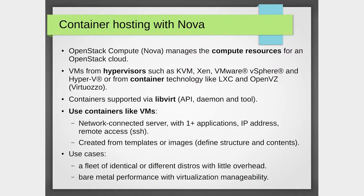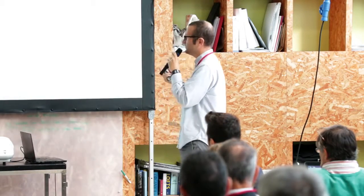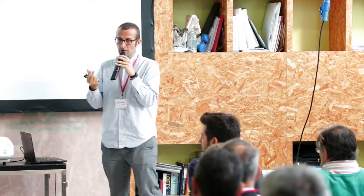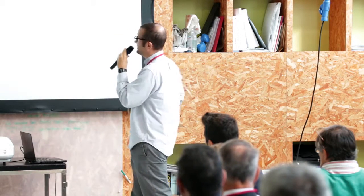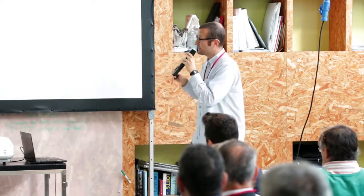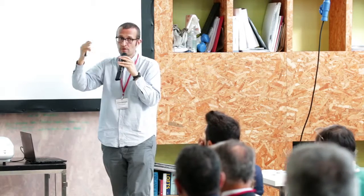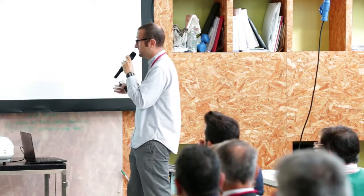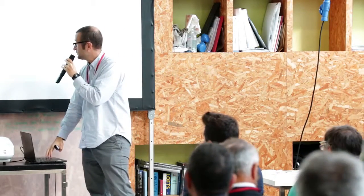Just to make things a little more complicated: I told you containers are not a replacement for virtual machines, but they can actually be used as virtual machines when we get to operating system containers only. If we use libvirt — the API and daemon for running cloud instances — with libvirt we can use KVM, VMware vSphere, Hyper-V, and also LXC. In that particular case we can use containers as we use virtual machines: we have a network connection, we can SSH into it, put applications there, and use images and templating. This can be done for improving bare metal performance or running a fleet of identical or different distros with little overhead.